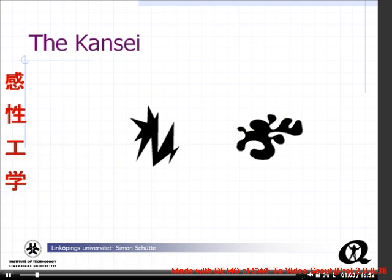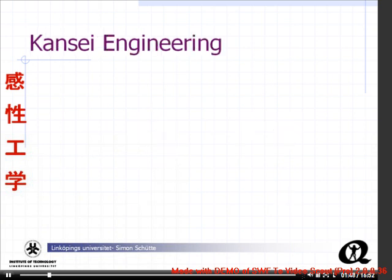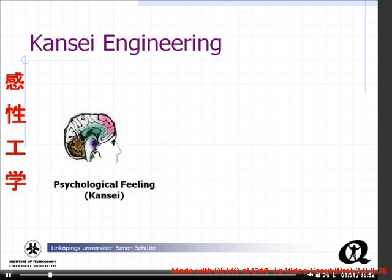If you see these two pieces of art, one is called Takete and the other one is called Lumumba. I have asked many students which one is Takete and which one is Lumumba, and almost 100% answer the same way. Maybe you who are listening now agree or disagree. But if you agree, the next question would be: why is that? That's much more difficult to answer. Kansei Engineering is a methodology which can capture this psychological feeling and translate it into a design solution.